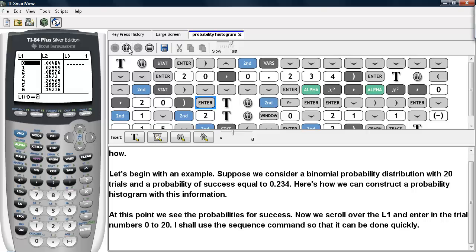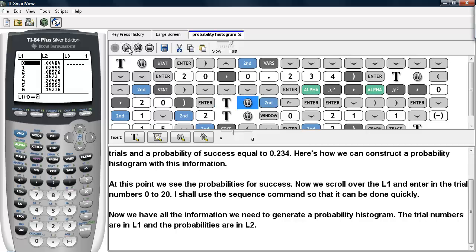And here we see that we have the trial numbers from 0 to 20. Now we have all the information we need to generate a probability histogram. The trial numbers are in L1, and the probabilities are in L2.